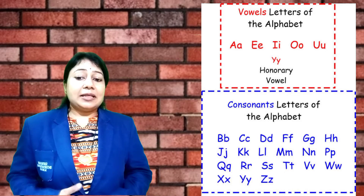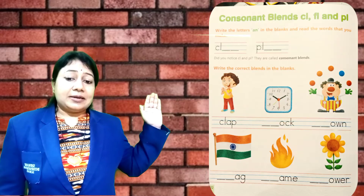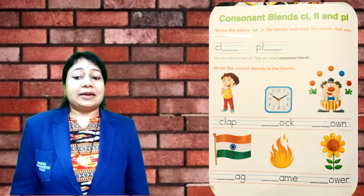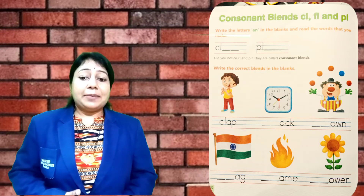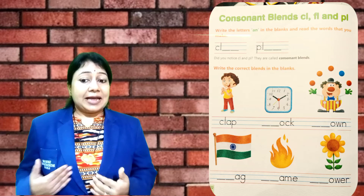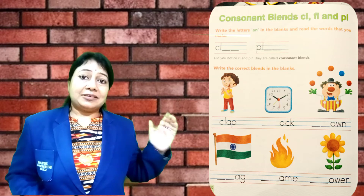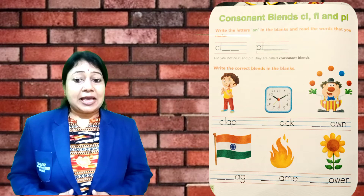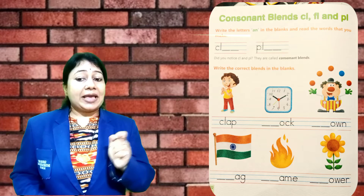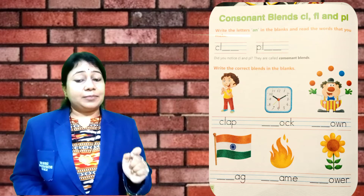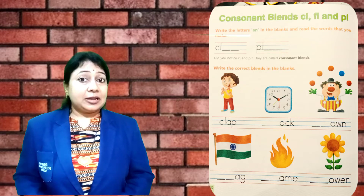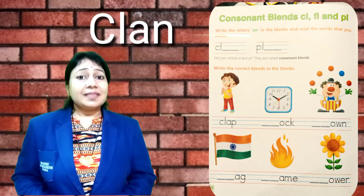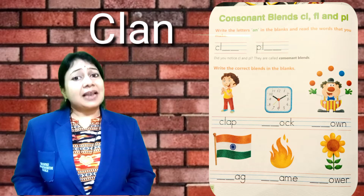Now, what do you do here? Write the letters in the blanks and read the words that you make. You can see here: C, L, D, S. We can write A, N — and add CL to make 'clan.' Now next: P, L, A, N — 'plant.'